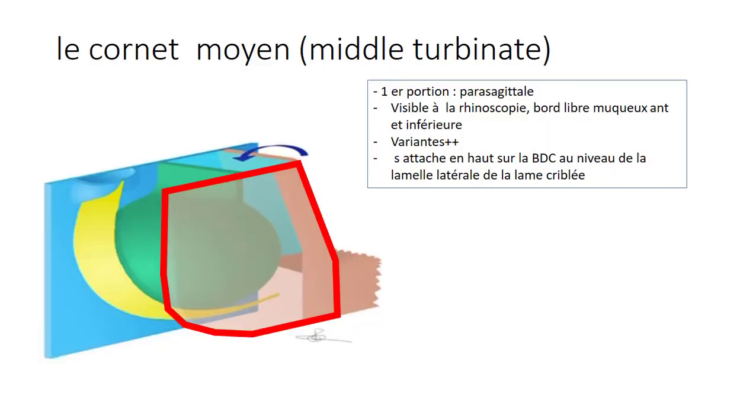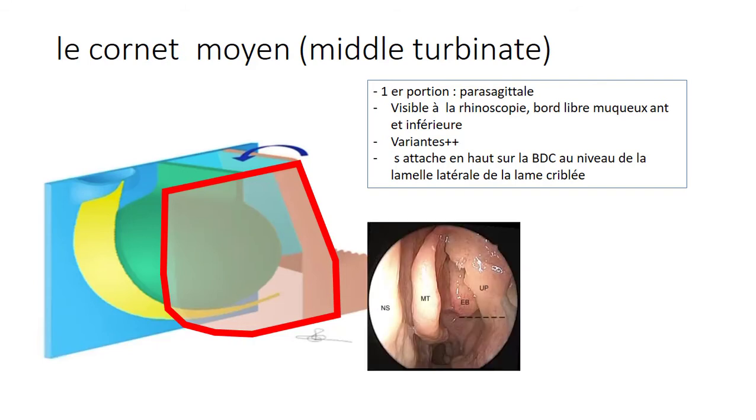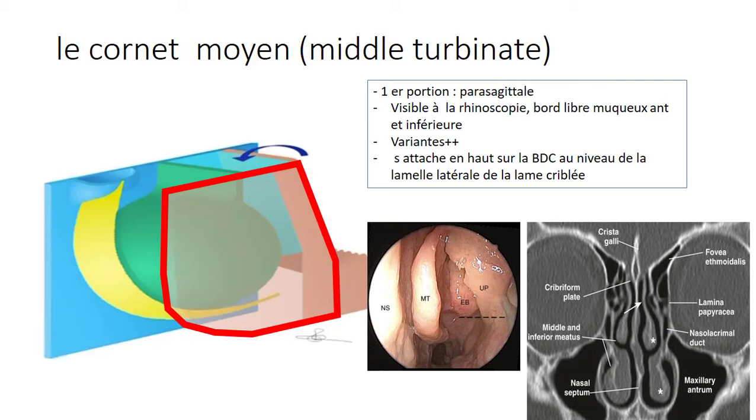The first portion is directly visible on rhinoscopy. It has an anterior and inferior mucus-free edge. It also has several anatomic variations as pneumatization, so that's what we call concha bullosa, inversion, or it can be bifid turbinate. It attaches at the top on the skull base at the level of the lateral lamella of the cribriform plate.